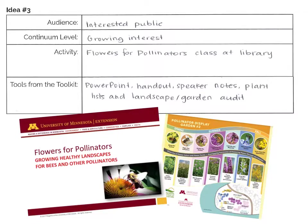It'd be great to teach a class to the general public at the local library. I'm going to assume that mostly gardeners will attend this session, which means the audience is higher on the continuum of learning — I'll be helping them grow an interest in flowers for pollinators. For this teaching opportunity, I'll use the PowerPoint, the handout, speaker notes for my own benefit, and a few plant lists and garden maps for hands-on activities. I won't forget to evaluate my efforts either.